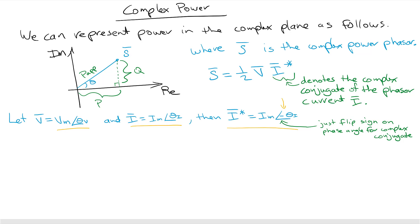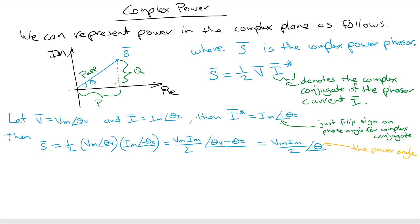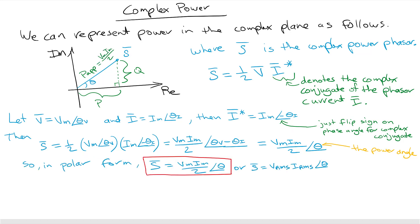We can write the complex power phasor as one-half times Vm at angle theta_V times Im at angle minus theta_I, giving us Vm times Im divided by 2 at a phase angle of theta_V minus theta_I — which is the power angle theta. In polar form, the complex power phasor equals Vm times Im divided by 2 at the power angle. If using RMS voltages, the factor of 2 drops out.